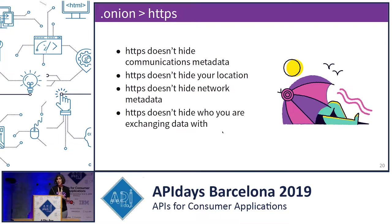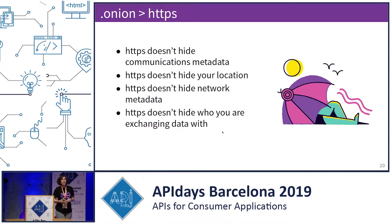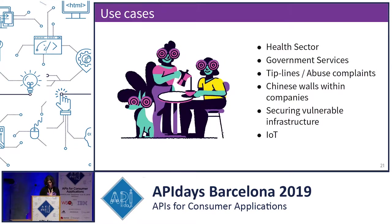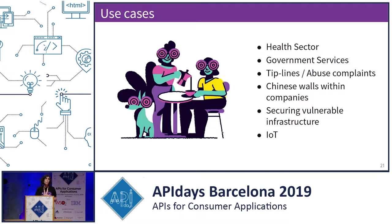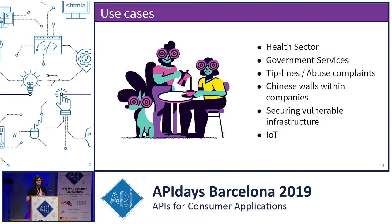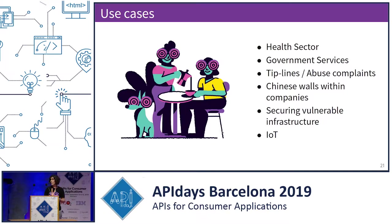Tor basically protects all this metadata for free, and it's technology that is secure enough to withstand the threat of nation-state-grade actors. So what are the use cases? Anywhere where you're sharing sensitive data: the healthcare sector, government services. If you need to enforce strict need-to-know rules within your company, this could be a good solution — you might not want one division or even the sysadmins to know who you're communicating with. It can also be very good for securing vulnerable infrastructure, since you would need to know the Onion address to even begin to reach it. There are also very good use cases for the Internet of Things and especially webcams, which are very easily exploited.